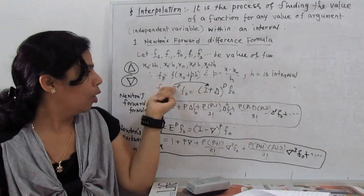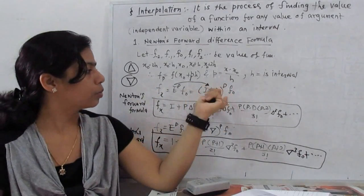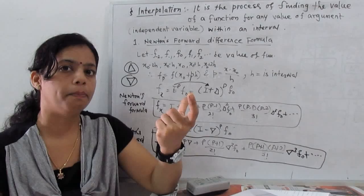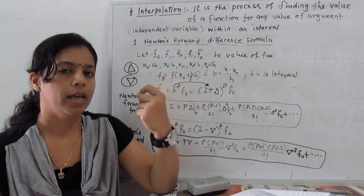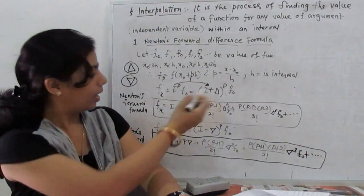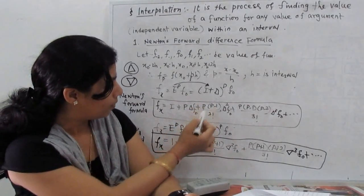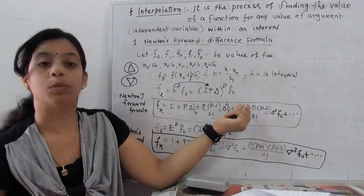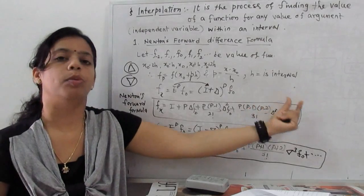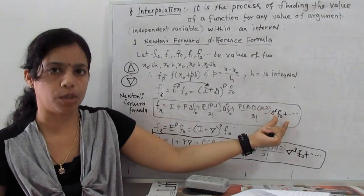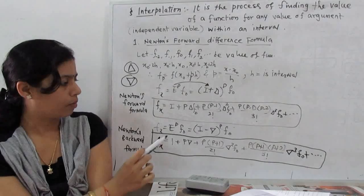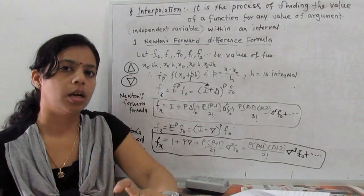So f(x) = (1 + Δ)ᵖ · f(0). Expanding using the binomial theorem — just like expanding (1 + x)ⁿ — we get: f(0) + p·Δf(0) + p(p−1)/2! · Δ²f(0) + p(p−1)(p−2)/3! · Δ³f(0) + p(p−1)(p−2)(p−3)/4! · Δ⁴f(0) + ... This formula is called Newton's forward difference formula.